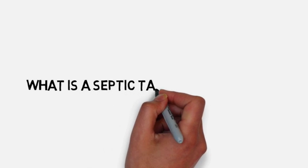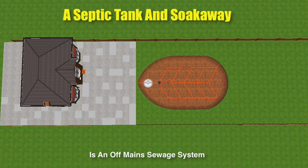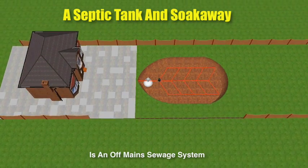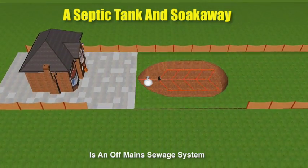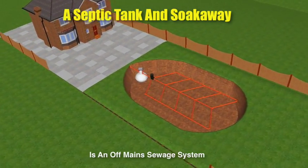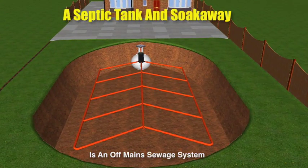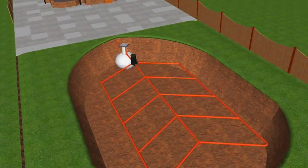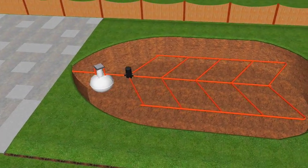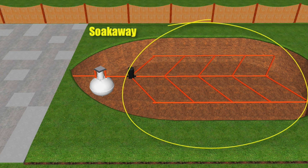What is a septic tank and soak away? A septic tank and soak away is an off-main sewage system, designed for properties that are not connected to the mains drainage. This kind of sewage system normally comprises two main components: number one, the septic tank, and number two, the soak away.